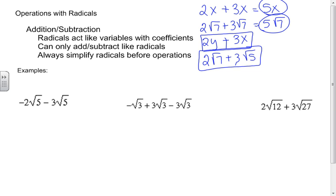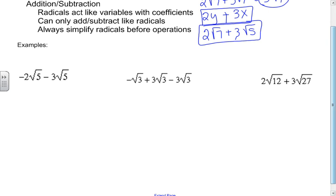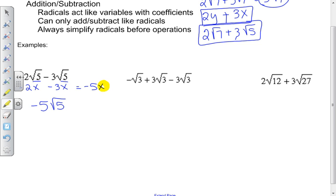We can only add and subtract exactly the same radicals, and we always want to simplify our radicals before we do any operations. In this first example, negative 2 square roots of 5 minus 3 square roots of 5 — my radicals are the same. Just like negative 2x minus 3x gives negative 5x, in this case we write negative 5 square roots of 5. The radical doesn't change, so this is my final answer.